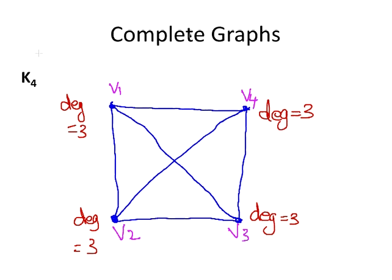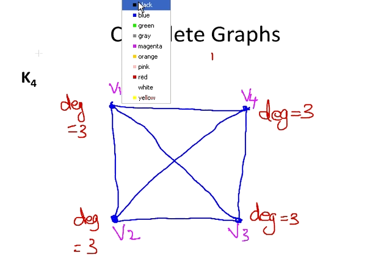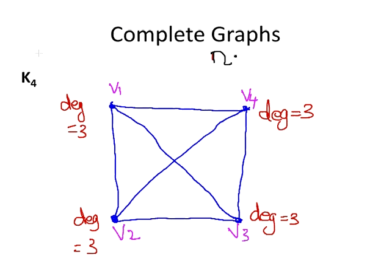So, let's just double check now. N is the number of vertices, and each vertex has degree N minus 1, and we're going to divide that by 2. So, in this case, we'd have 4 times 3 all over 2, which is 6. And we do actually have 6 edges. So, this looks promising.